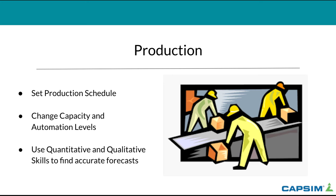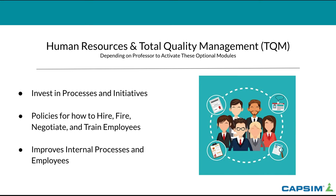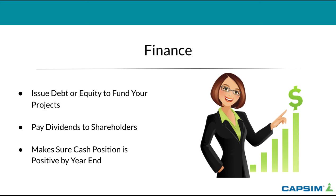Next is production, where you set a production schedule for how many units to produce, change capacity, hire or fire people, buy or add machinery, and increase or decrease automation levels. There's no one perfect way to do this — you'll use both quantitative and qualitative skills to find accurate forecasts. The optional modules, human resources and total quality management (TQM), focus on investing in processes and policies for hiring, firing, negotiating, and training employees, both of which improve internal processes.